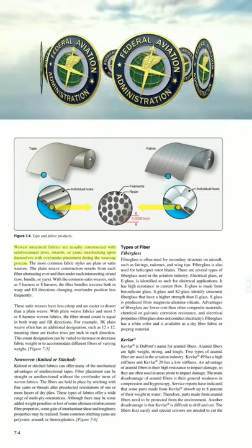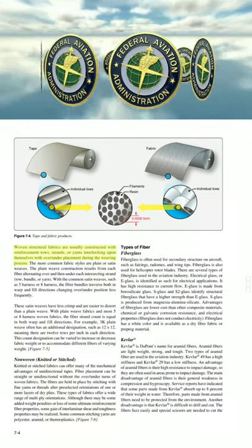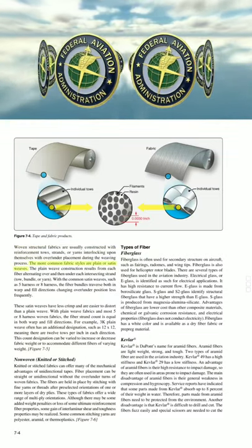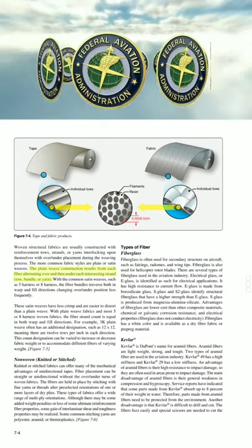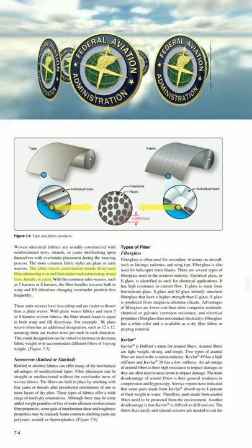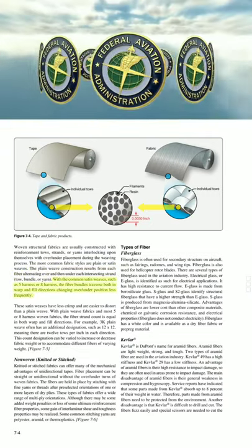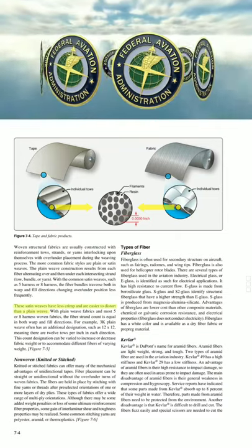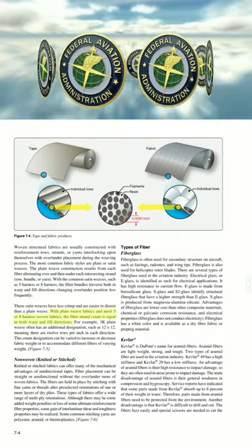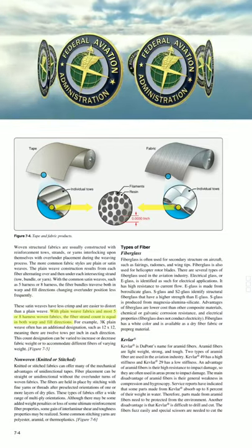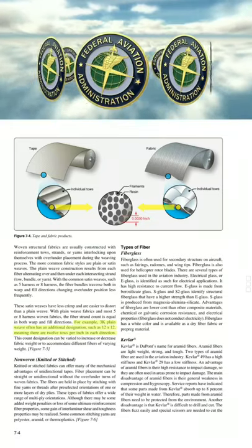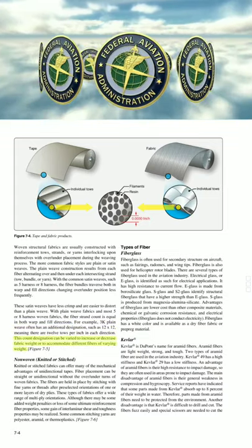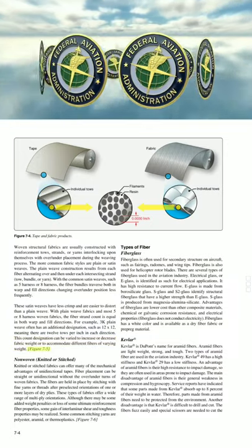Woven structural fabrics are constructed with reinforcement tows, strands, or yarns interlocking with over/under placement during weaving. The more common fabric styles are plain and satin weaves. The plain weave results from each fiber alternating over and under each intersecting strand. With common satin weaves such as 5-harness or 8-harness, fiber bundles traverse warp and fill directions changing over/under position less frequently, resulting in less crimp and easier distortion than plain weave. With plain weave and most 5- or 8-harness woven fabrics, the fiber strand count is equal in both warp and fill directions. For example, 3K plain weave often has a designation such as 12×12, meaning 12 tows per inch in each direction.